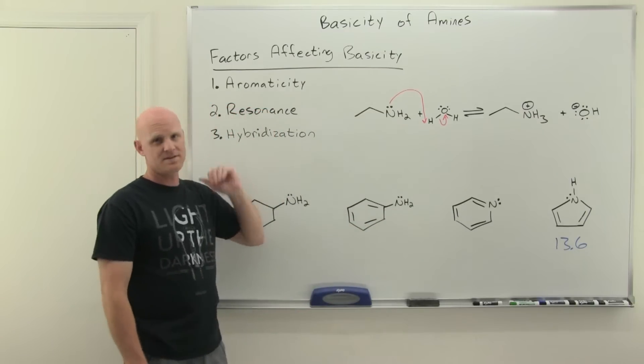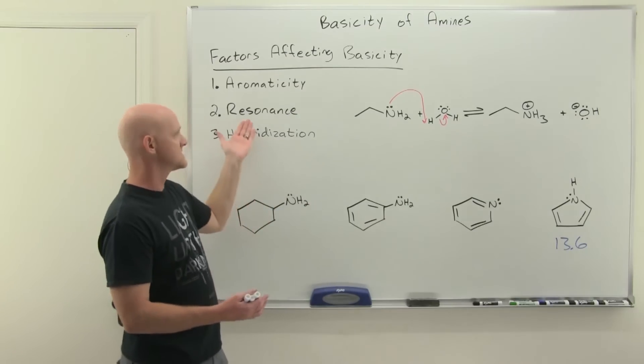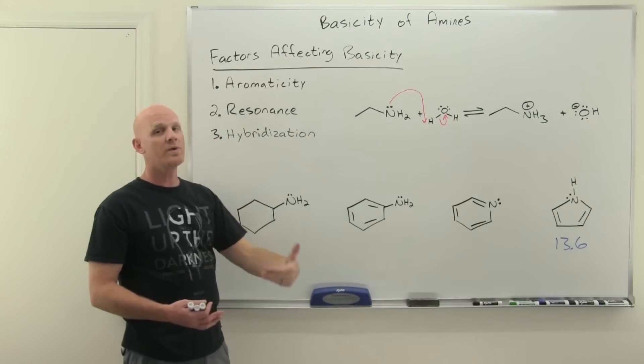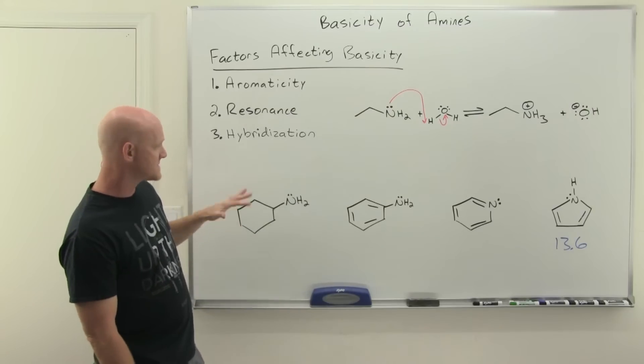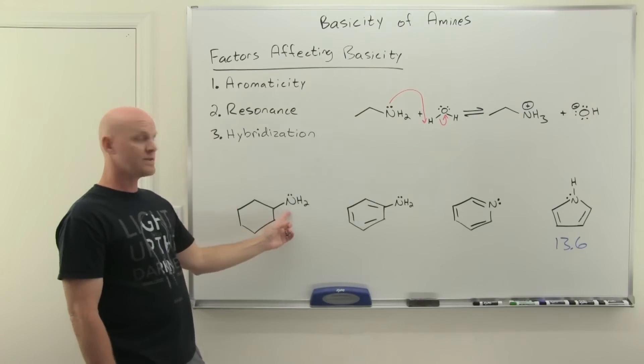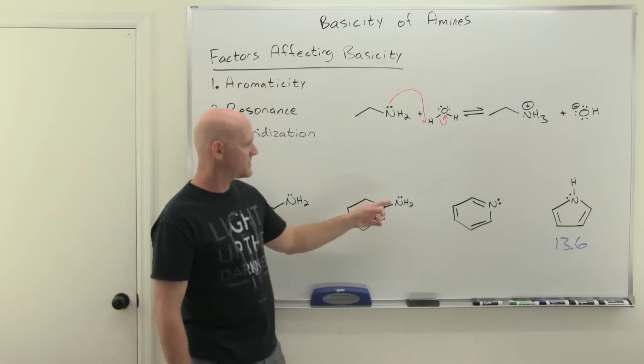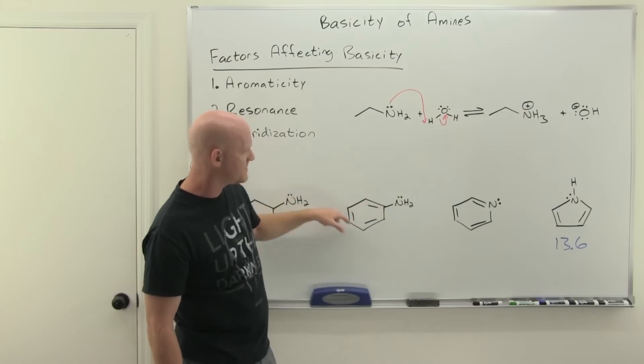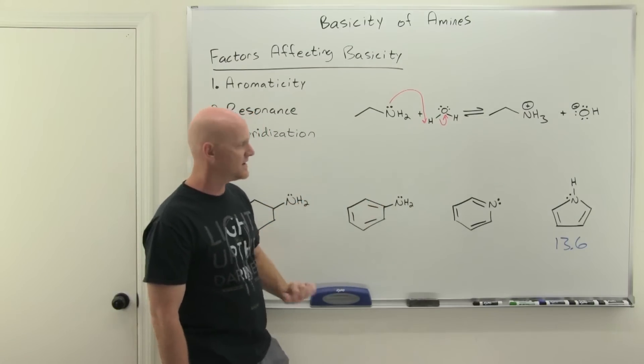Now, the second thing is going to be resonance. Notice aromaticity leads to delocalization of electrons. Well, so does resonance. Notice this was the R in ario or R in cardio, whichever mnemonic you're using. In this case, which of these are resonance stabilized? Well, it's definitely not this guy. No pi electrons of note in this structure. But this one here, the lone pairs on the nitrogen, that is one bond away from the pi electrons in a benzene ring. There's going to be resonance delocalization here.